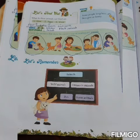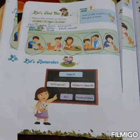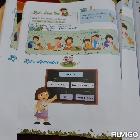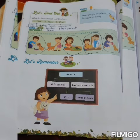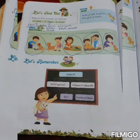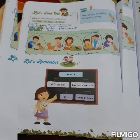Circle the picture that shows the correct way of treating pet animals. You have to circle the correct way to treat pet animals, such as giving a dog food and water, taking them to the doctor, and looking after them properly.